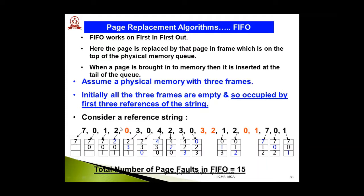As per the sequence, page 2 is the next page to be brought into memory, but all three frames are occupied. As per FIFO, page 7 — which is at the top — is replaced by page 2. Moving further, page 0 already exists in memory so no replacement is needed. For page 3, since page 2 was most recently replaced, the next in sequence is page 0, so page 0 is replaced by page 3.